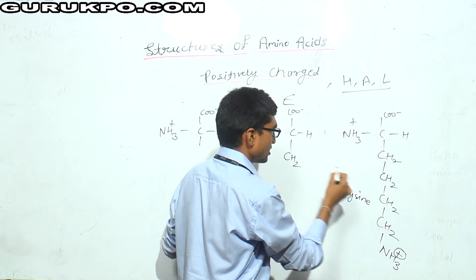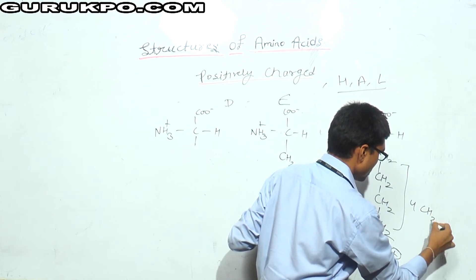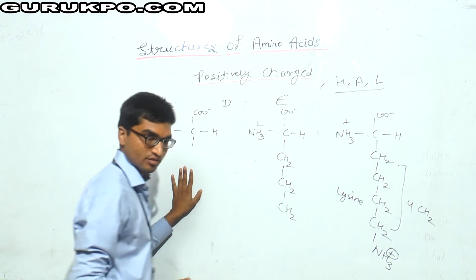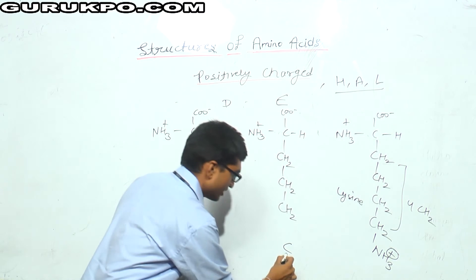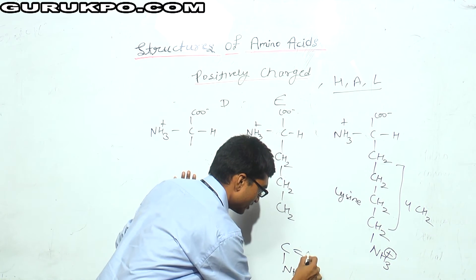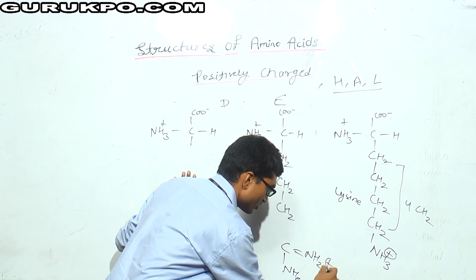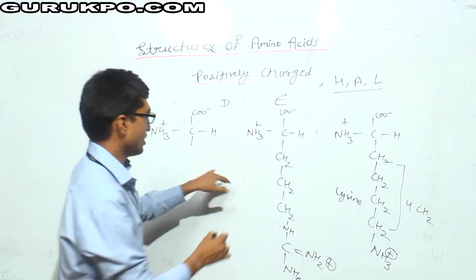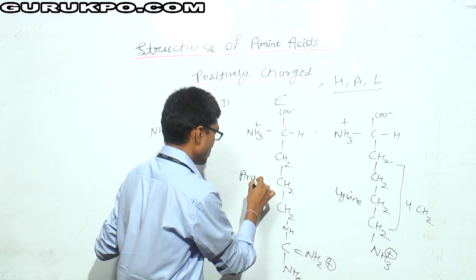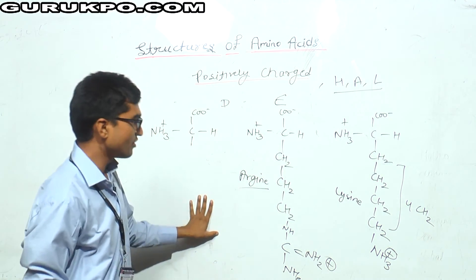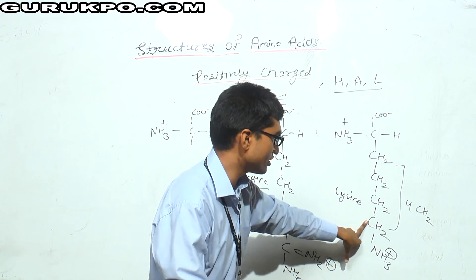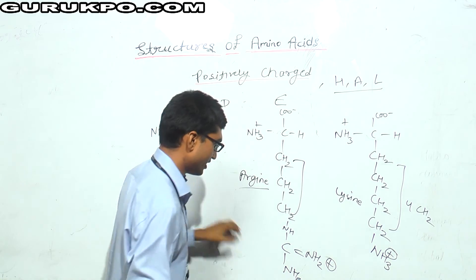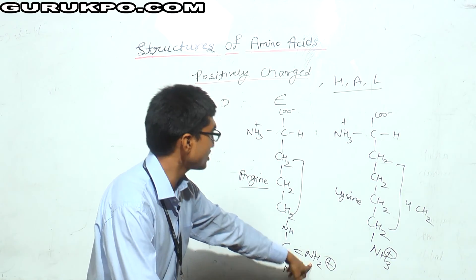For arginine, you need to place three CH2 groups, and thereafter a carbon, then an amine group (NH2), then again an amine group with a double bond carrying a positive charge, and finally an NH group. This amine group provides the positive charge to arginine. In lysine there are four CH2 groups and one amine group, while arginine has three CH2 groups.